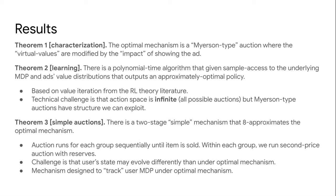Finally, we designed a simple mechanism that can approximate the optimal mechanism. While Myerson-type auctions are somewhat complicated, our auction is fairly simple: it splits ads into groups and runs an auction for each group until the item is sold, and within each group it is just a second-price auction with reserves.